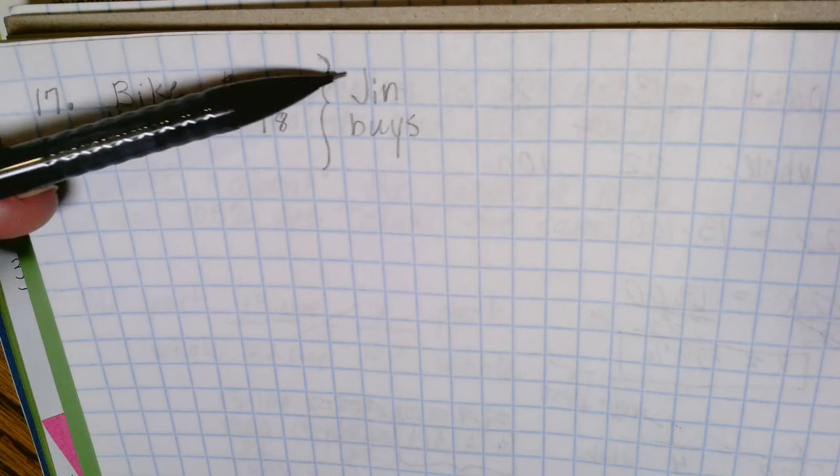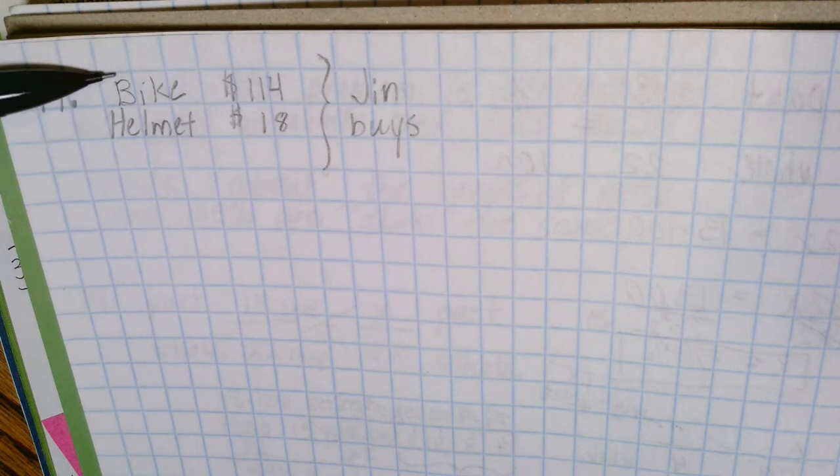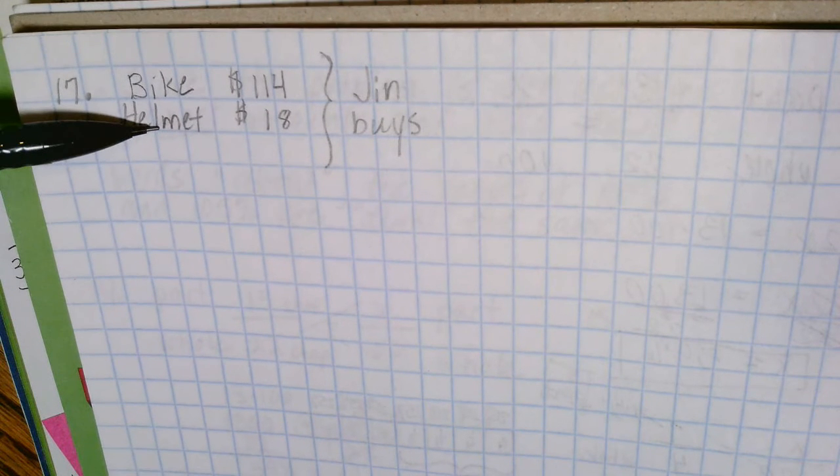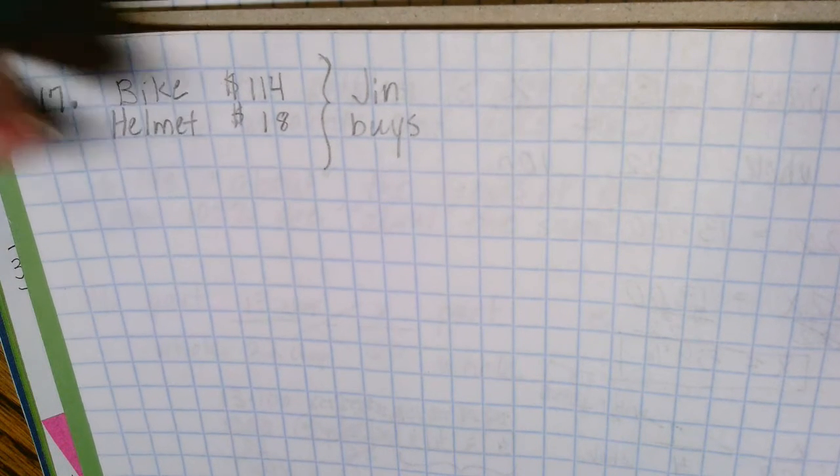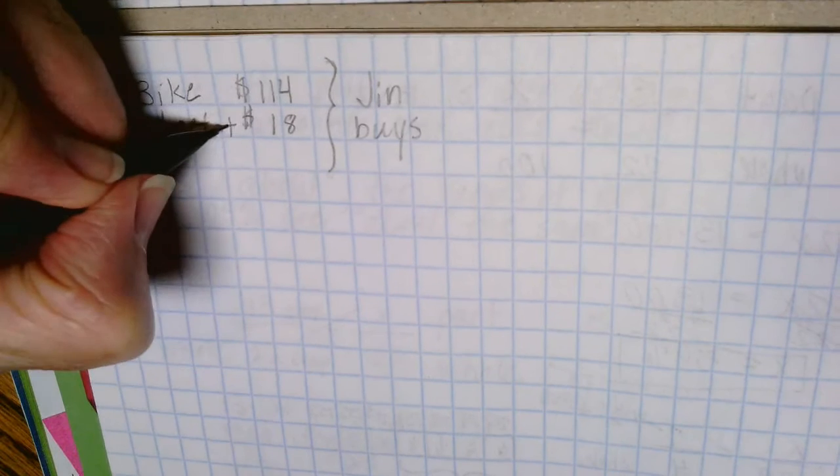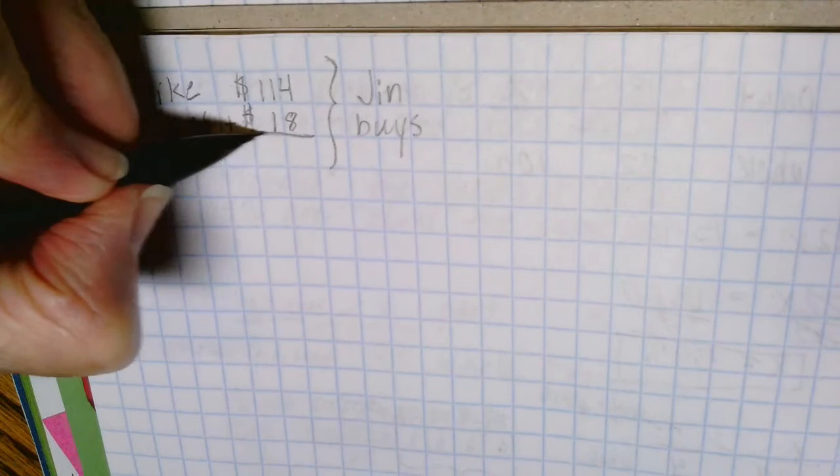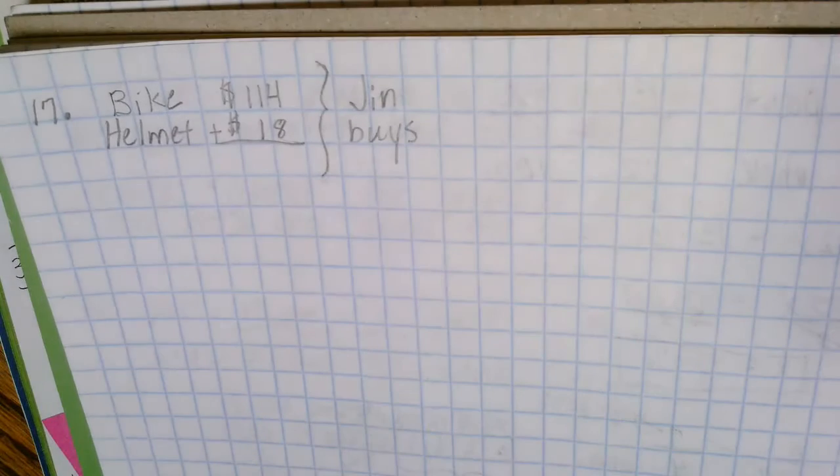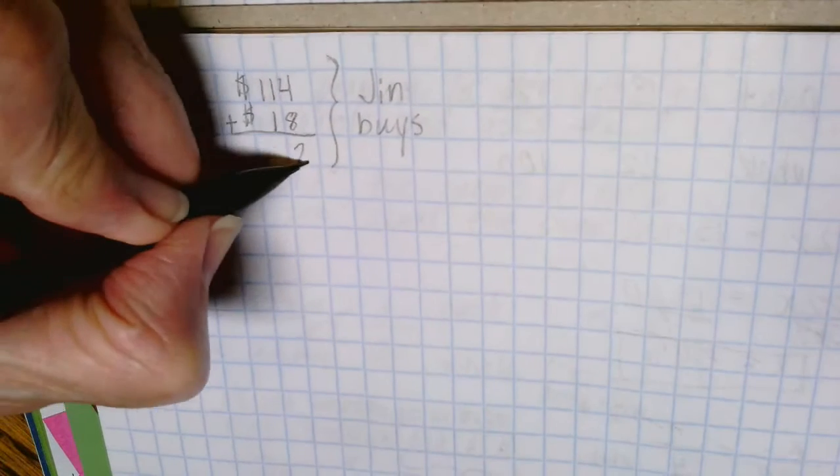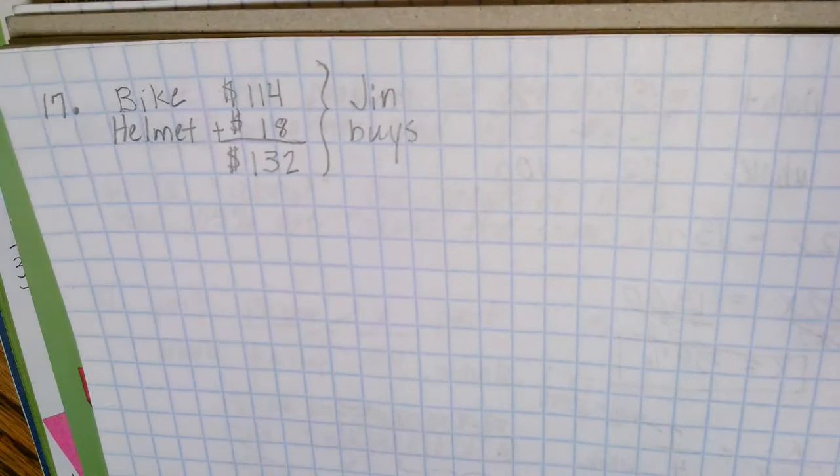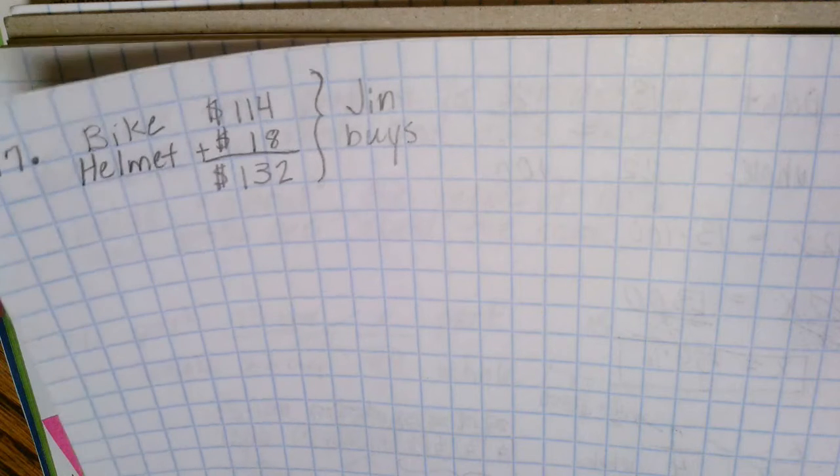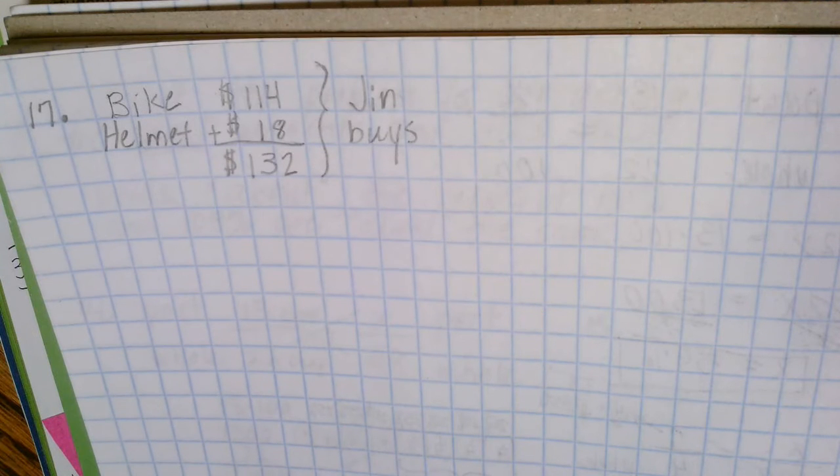Jin buys a bike and a helmet and he pays Stefan this much money. To find the total amount that he paid for the two items we would add and find that Jin bought the bike and the helmet for $132.